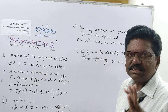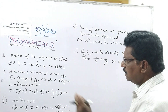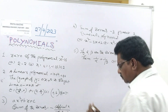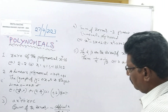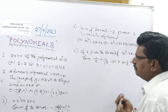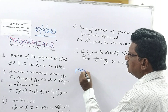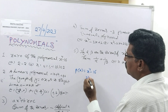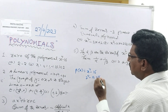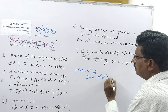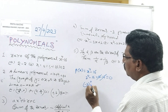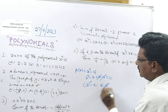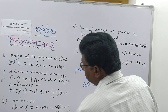The second type is the option checking type. Each value of the option, we have to put into the given polynomial. The polynomial is P(X) = X to the power 4 minus 16. Substitute 2: 2 to the power 4 minus 16 = 16 minus 16 = 0. Again, (-2) to the power 4 minus 16 = 16 minus 16 = 0. So the first option is the right option.